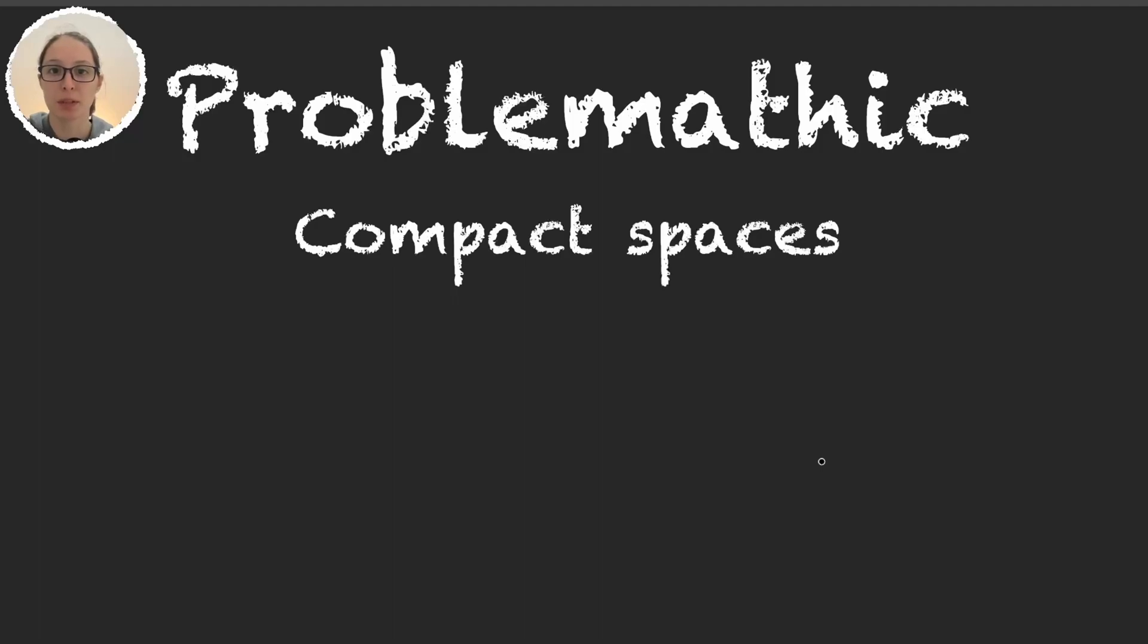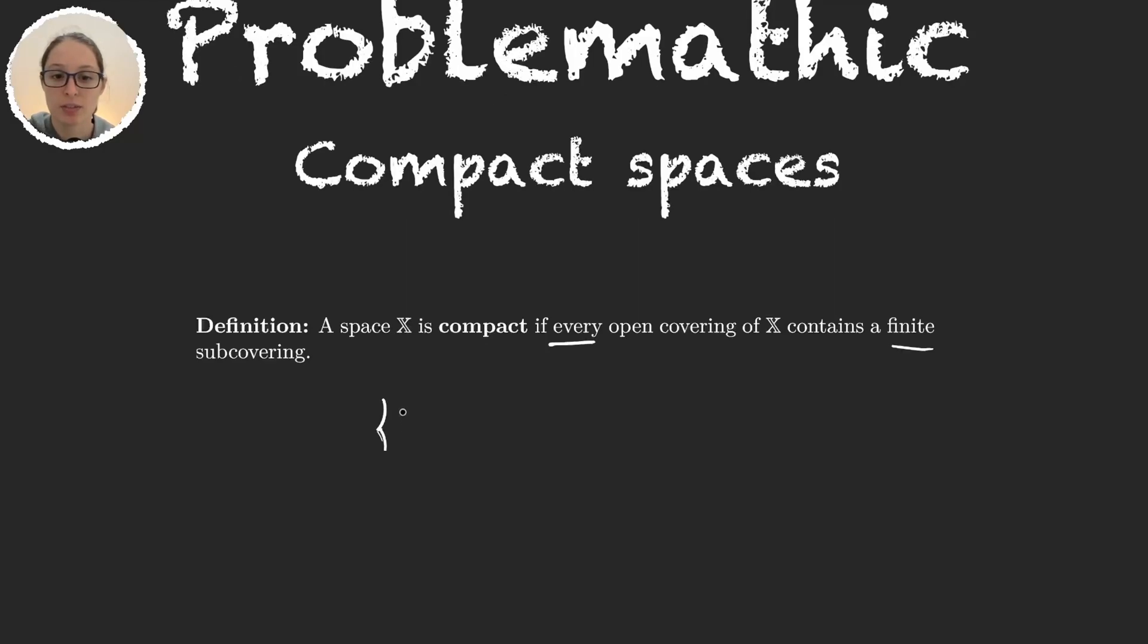We say that a space is compact if every open covering of X contains a finite subcovering. So what does this mean? A collection {U_α} is going to be a cover of X...